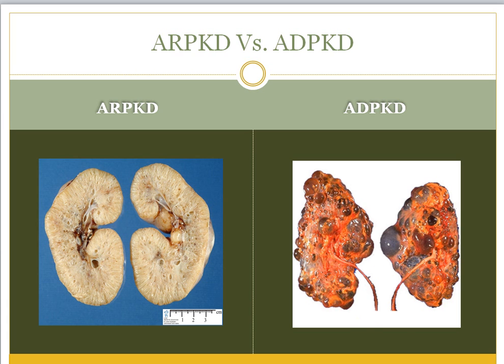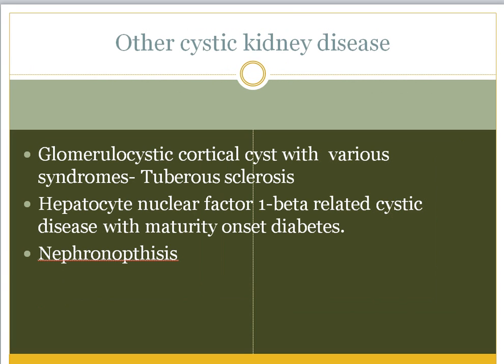Other cystic kidney diseases include glomerulocystic cortical cyst disease associated with tuberous sclerosis, and hepatocyte nuclear factor 1-beta related cystic disease associated with maturity-onset diabetes. Additionally, nephronophthisis encompasses many different diseases. In summary, the cystic diseases covered include: MCDK, cystic renal dysplasia (CRD), medullary sponge kidney, autosomal recessive polycystic kidney disease (ARPKD), and autosomal dominant polycystic kidney disease (ADPKD).